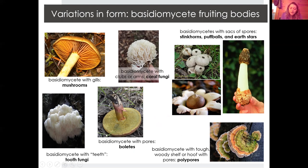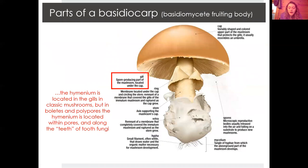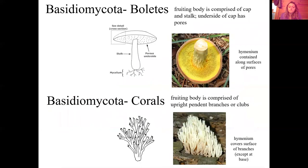Some variations in life form: the traditional basidiomycete has gills — a gill-cap mushroom. You also see tooth fungi, boletes which have pores instead of gills, coral fungi with big arms, stinkhorns, puffballs, and earth stars. Other basidiomycetes have a tough woody shelf — those are polypores. Remember that the hymenium is located in the gills of the classic mushroom, but in boletes, polypores, and tooth fungi it's located in different layers.